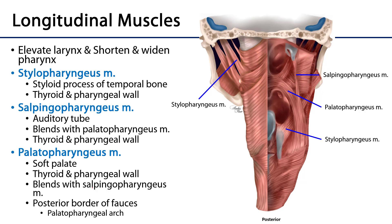If we take a posterior view of the pharynx with the wall split — so that the pharyngeal raphe has been incised and reflected away — we can see the pathways of the longitudinal muscles. It's helpful to keep in mind that the longitudinal muscles are named in ways that recall their proximal attachment sites. The stylopharyngeus muscle attaches to the styloid process of the temporal bone, comes down, parts the superior from the middle pharyngeal constrictor muscle, and inserts on the thyroid cartilage of the larynx.